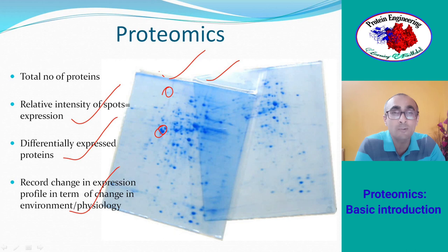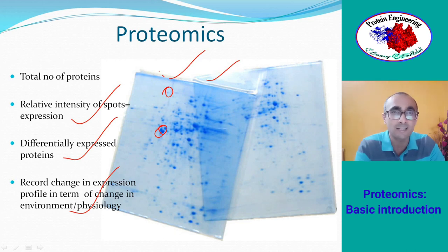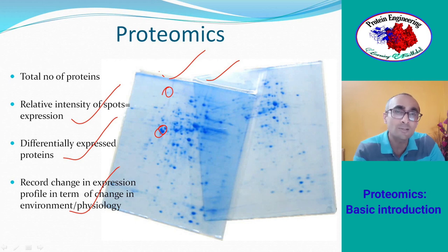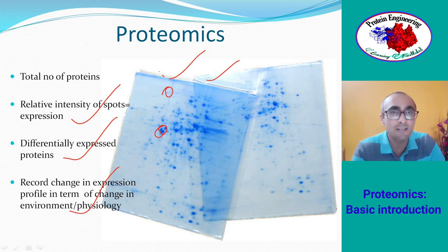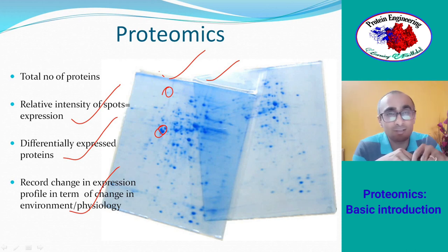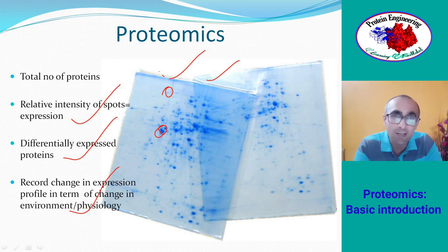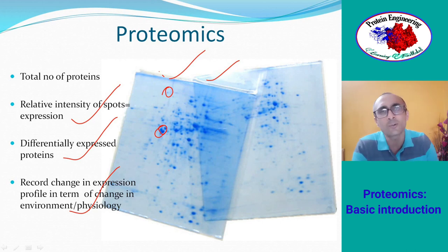You can record changes in expression profile in terms of changes in environment or physiology. For example, to see which proteins are present in a cell kept under stress like high salinity, you run 2DGE of a normal cell to look at its proteome, and simultaneously keep another cell under high saline concentration and look at that proteome. By comparing both gels you can record the change in expression of proteins in different conditions.